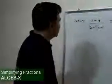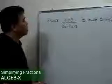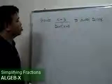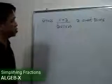In this next problem, we are asked to reduce the fraction x plus 3 divided by quantity 2x plus 7, x plus 3, to lowest terms.